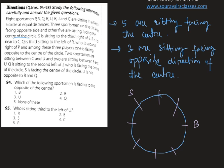Two sportsmen are sitting between C and U, and two are sitting between B and U. Therefore the position of U must be this. Q is sitting to the second left of J, who is facing the center of the circle, and S is facing the center of the circle. U is not opposite to B and Q.